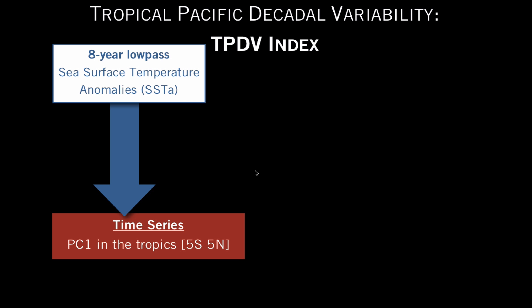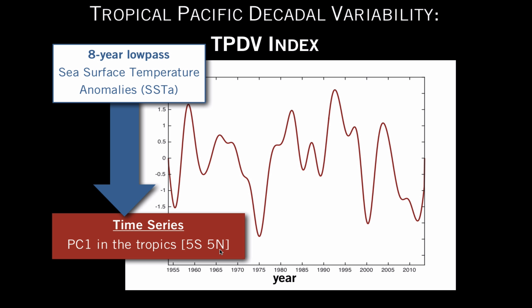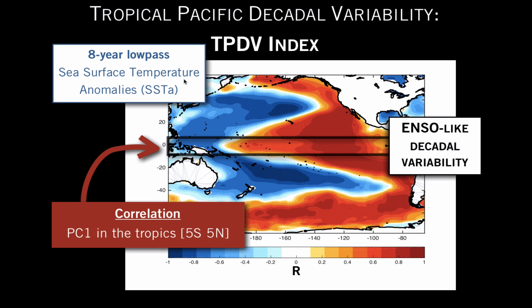First, I'd like to begin by characterizing what I mean by Tropical Decadal Variability and define a sort of TPDV index. I do that by taking the 8-year low-pass sea surface temperatures and computing the first principal component of the SST anomalies between 5 south and 5 north, which is essentially in the tropics. This is what the principal component looks like from 1955 to present.